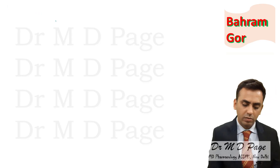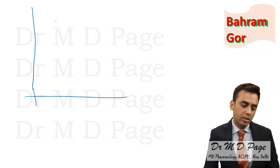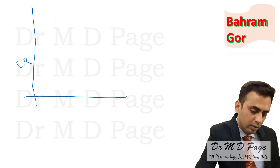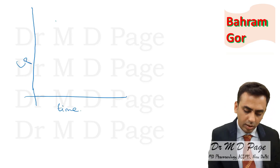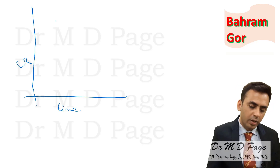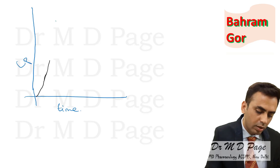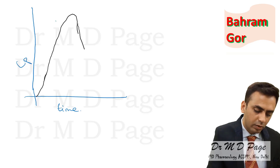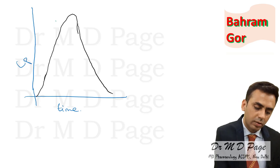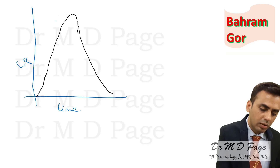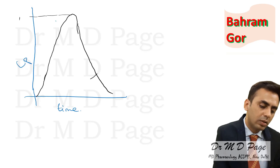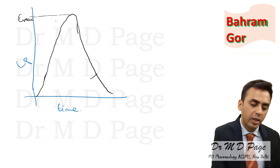A few things about area under curve: when we plot plasma concentration-time curves, with concentration on one axis and time on the other, for the oral route the concentration rises slowly and then declines slowly. The maximum concentration reached is known as C-max.